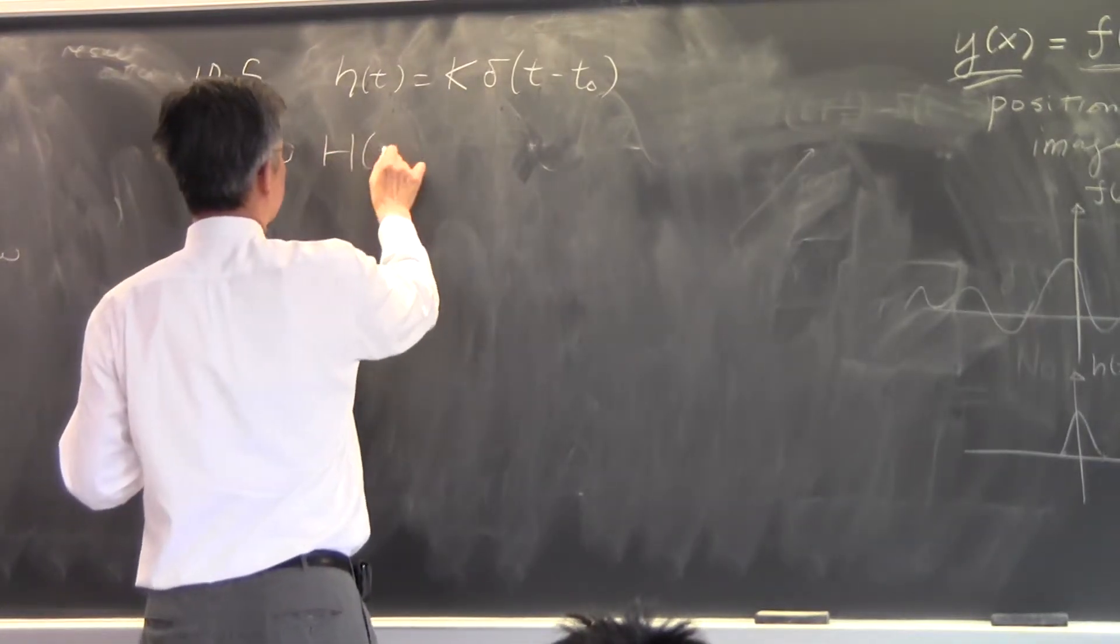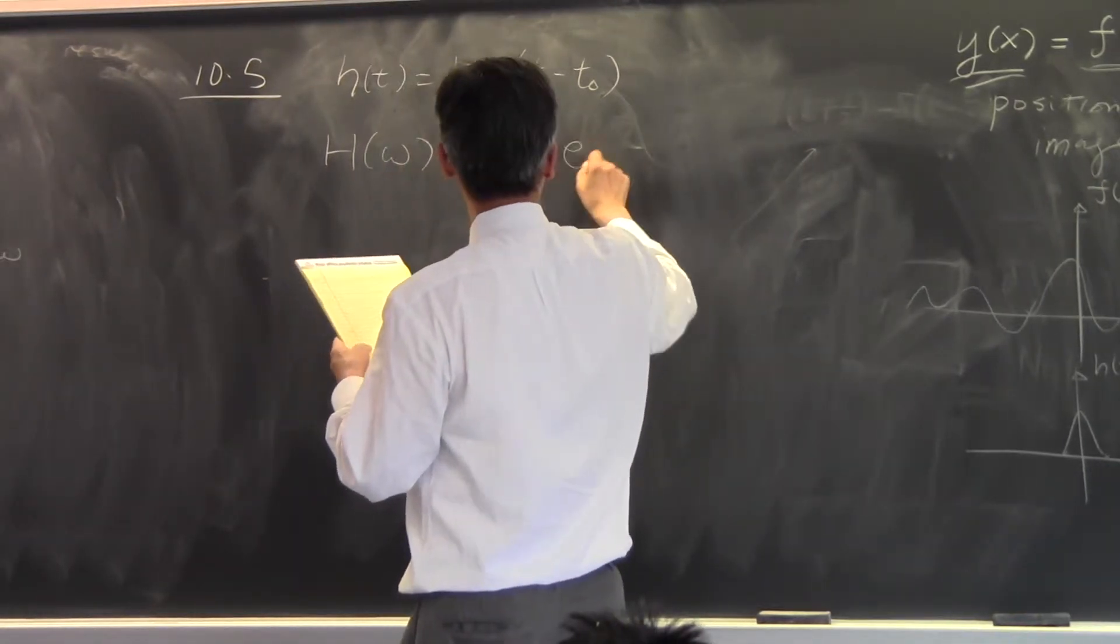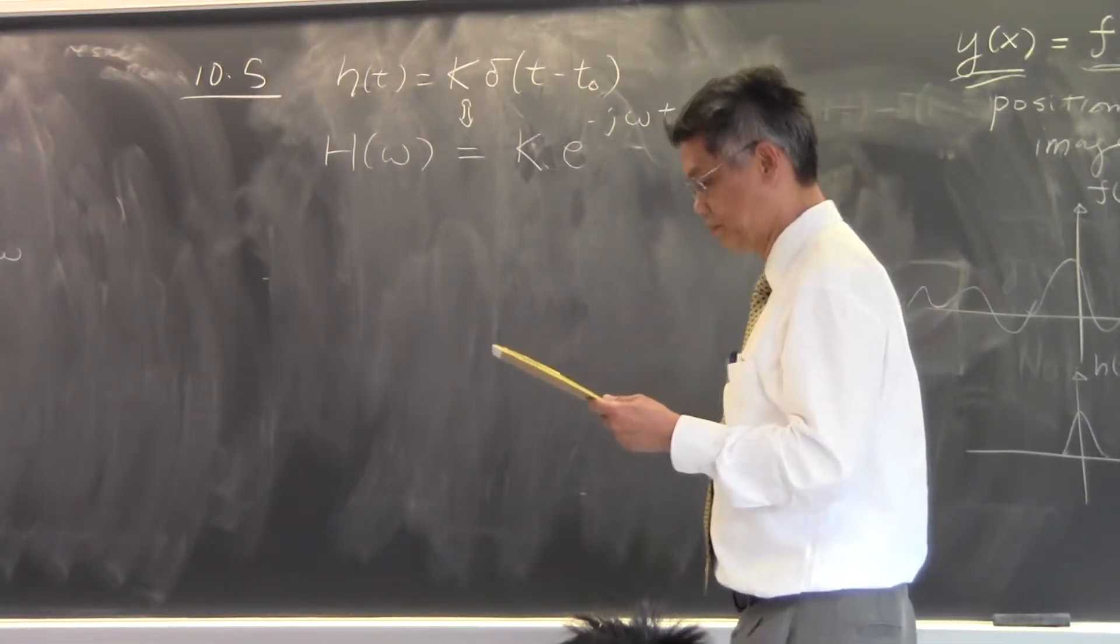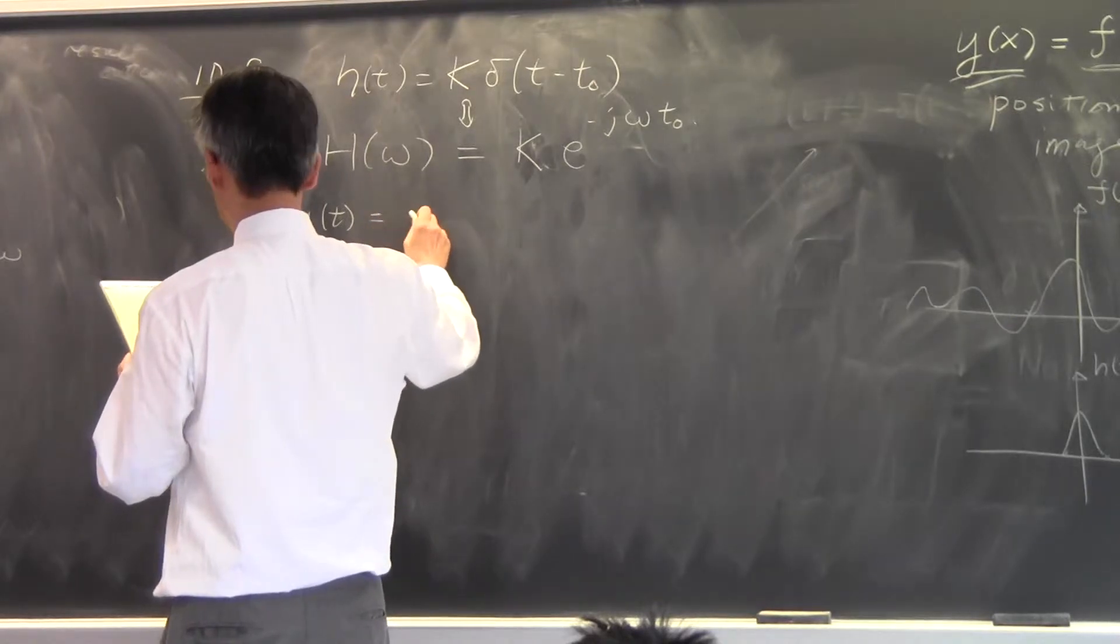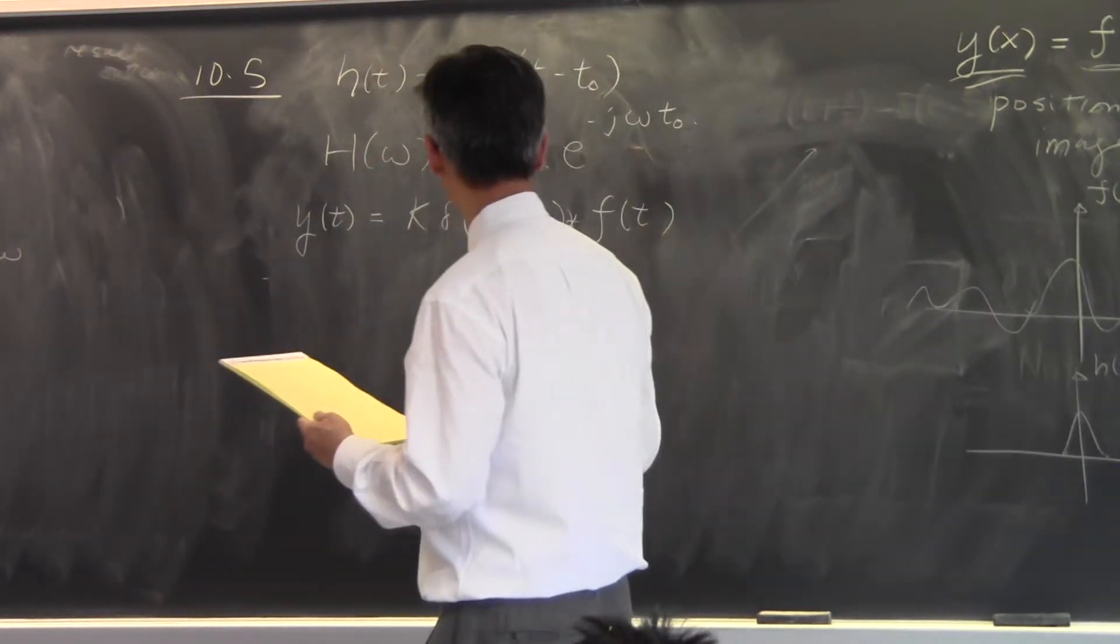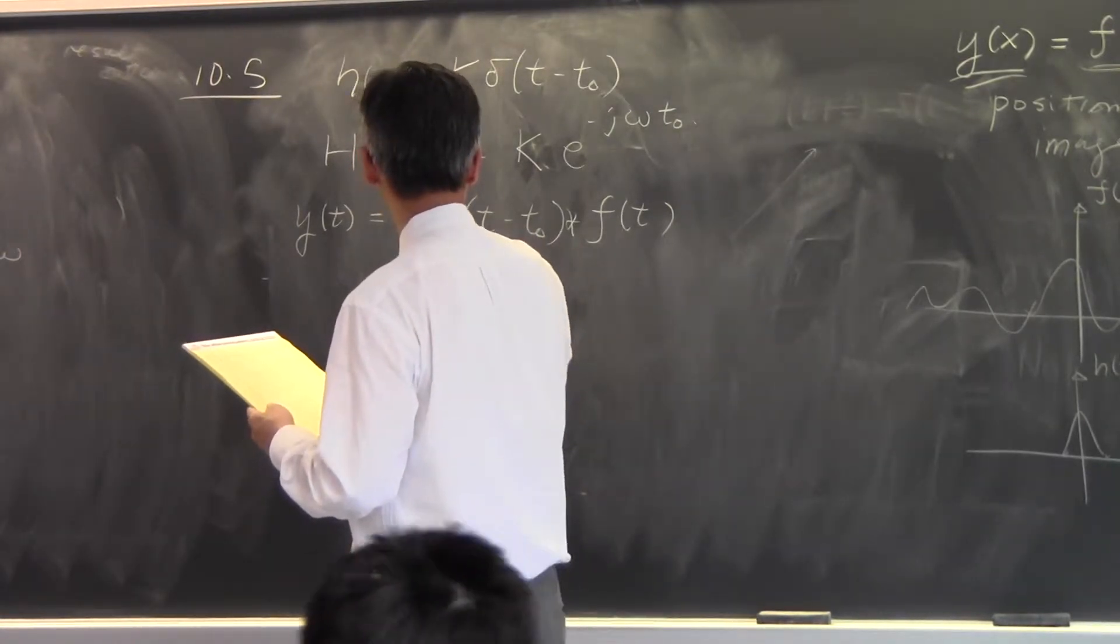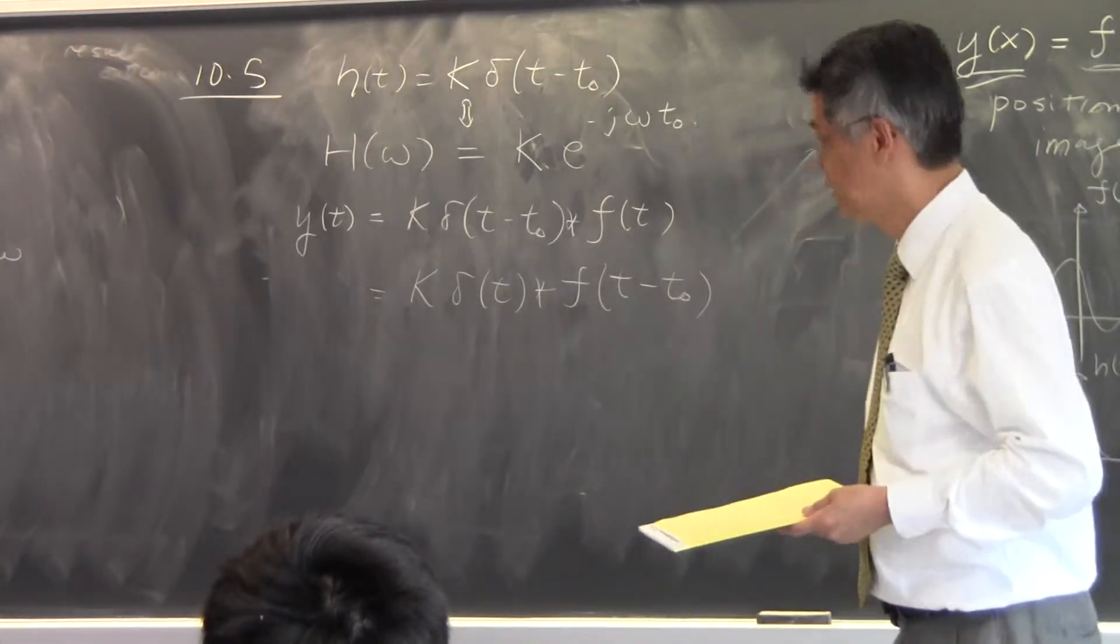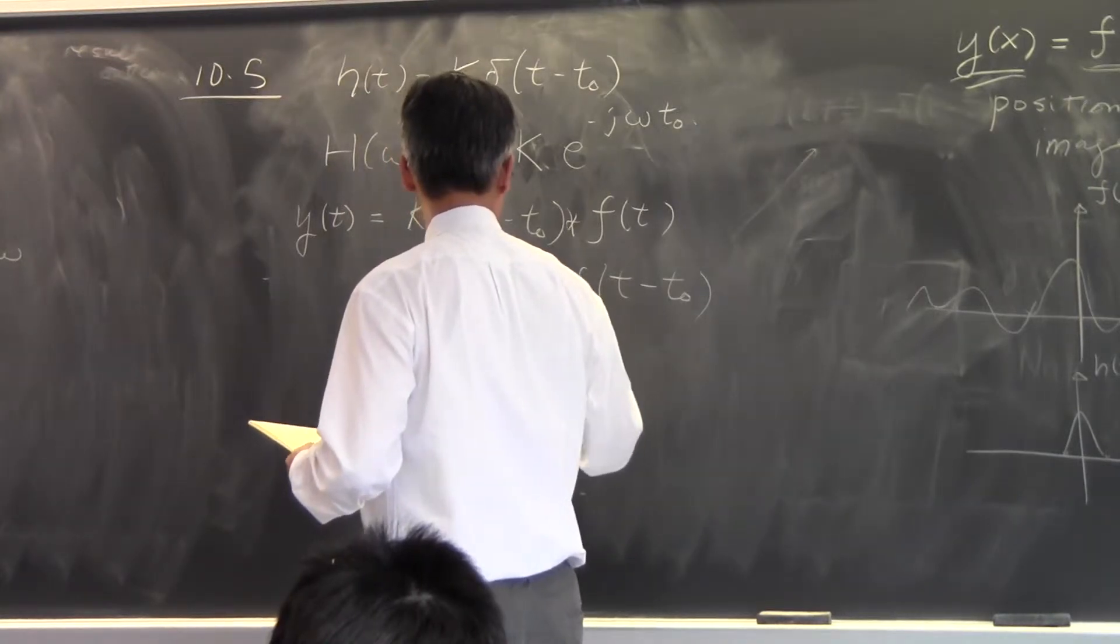And then, we know that when you find a Fourier transform of this, the Fourier transform of this is going to be e to the minus j omega T-naught. So, if you have an output through this system, then it's going to be just k delta T minus T-naught convolved with an input, and using the delay property of this, or using the sifting property of the delta function. This is actually k delta T convolving with f T minus T-naught, if you use the delay property of convolution, and then this is just going to be k f of T minus T-naught.